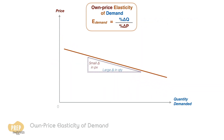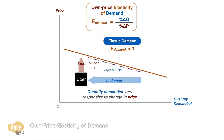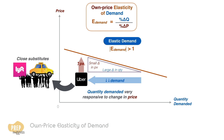When the quantity demanded is very responsive to a change in price, we say the demand is elastic. The absolute value of elasticity is greater than 1. This tends to be the case for goods that have close substitutes. For example, if the price of Uber rides increases, demand may fall by a lot because commuters can turn to other ride-hailing services or take alternative forms of transport like taxis or public buses.